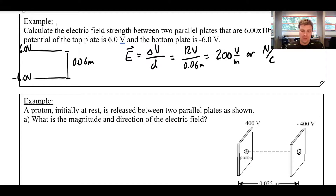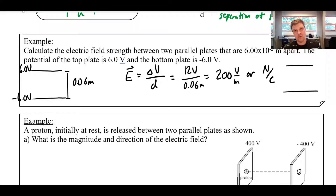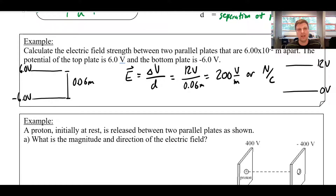One more thing: when we talk about potential difference, what matters is the relative difference between the two plates. A +6 V top plate and −6 V bottom plate is identical to a 12 V top plate and 0 V bottom plate, or even a 112 V top and 100 V bottom — that's still a difference of 12. The absolute voltage doesn't matter; what matters is the potential difference.